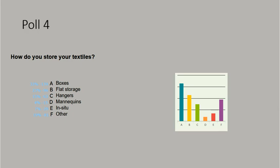When you say 'in situ,' that would mean it's not actually stored in a storage area, but basically stored on display at all times or stored in a historical piece of furniture. It's looking like predominantly boxes and flat storage, which is good. Like people are saying, it can be in a nice archival box, but then you open the box and it's like an explosion of fabric. So it's not always ideal.